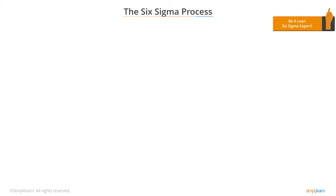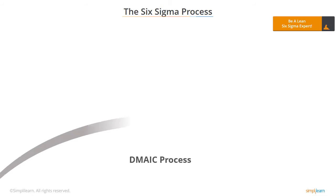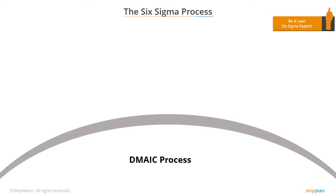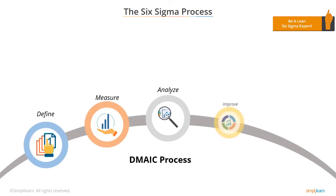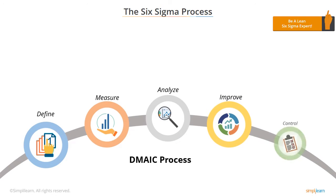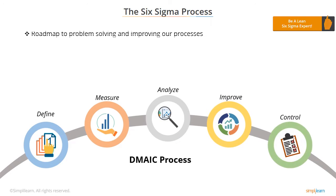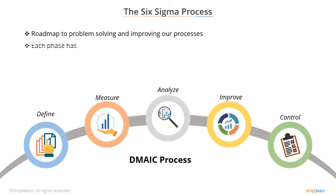The Six Sigma process is known as DMAIC. DMAIC comprises five phases: define, measure, analyze, improve, and control. These phases are the roadmap to problem solving and improving our processes. The effectiveness of the Six Sigma method is derived from its structure.